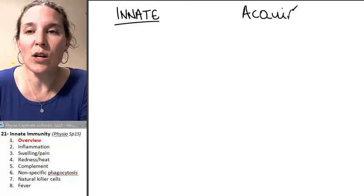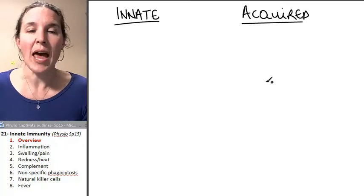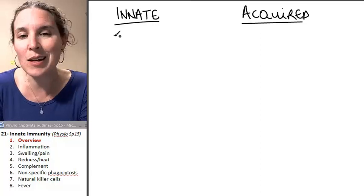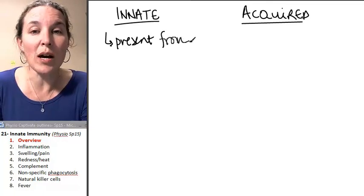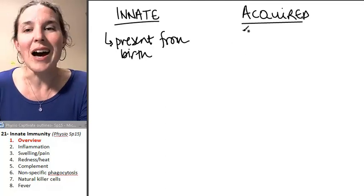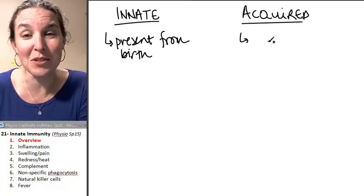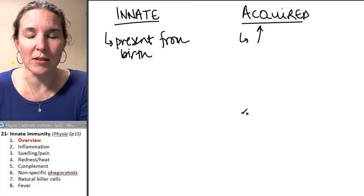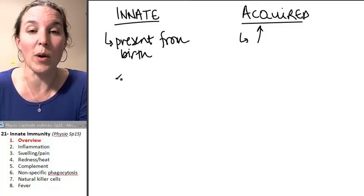I'm just going to do a really quick compare and contrast. Both carry out strategies to kill non-self. The innate immune system, however, is present from birth. That means you come out of your mama's belly ready to attack things that aren't you. The acquired immune system is acquired. I'm not even going to write that down because it requires time to get the strategies that are employed with the acquired immune response.